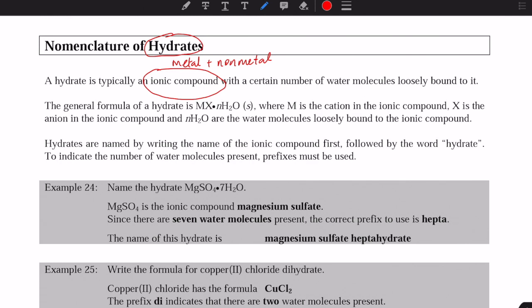The way we write the formula of these hydrate compounds is you write the ionic compound formula, symbolized as MX, where M is the metal and X is the non-metal. N represents the number of water molecules attached to the hydrate, followed by the formula H2O for water.